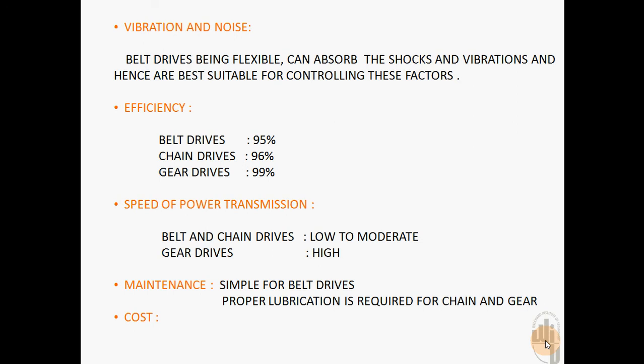Considering efficiency, gear drives have the highest efficiency of power transmission, as high as 99 percent, whereas belt and chain drives have comparatively less efficiency, at around 95 to 96 percent.